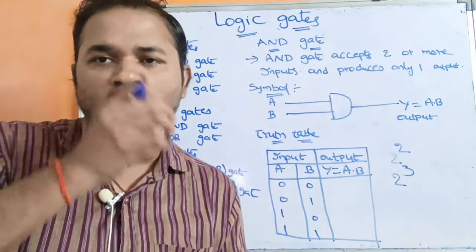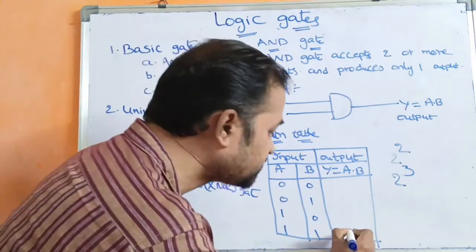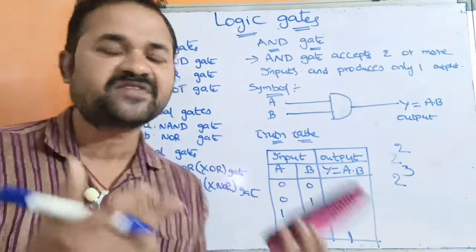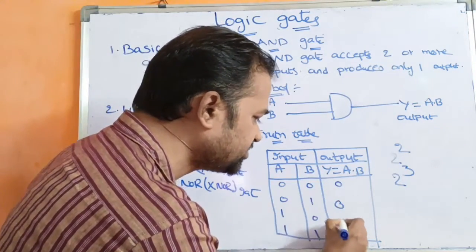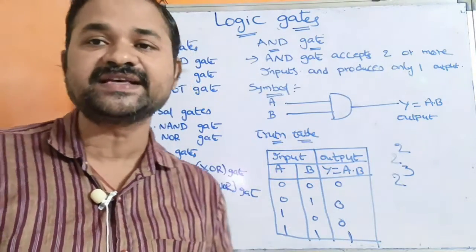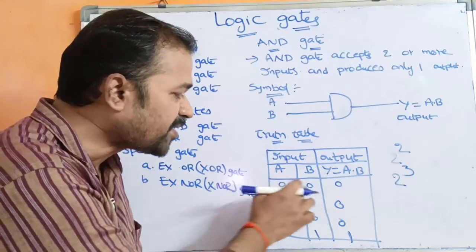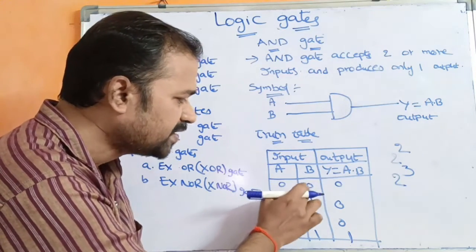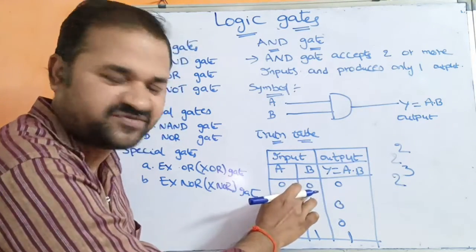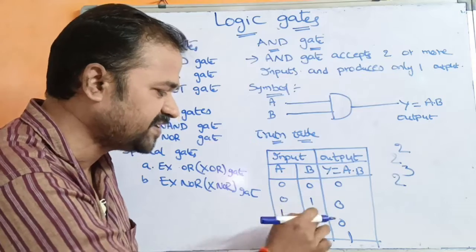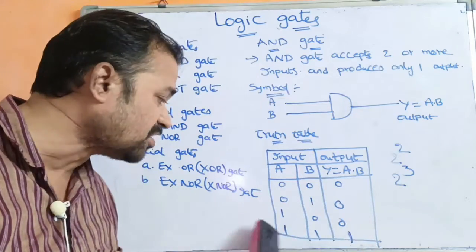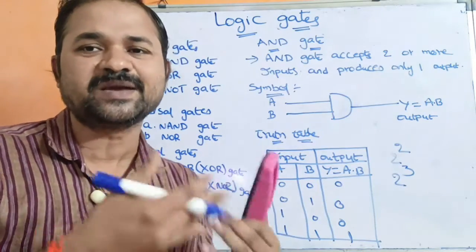For the AND gate, if both the inputs are 1, then the result is 1. Otherwise the result is 0. Here 0 is called as low, whereas 1 is called as high. So we can say that if one of the inputs is 0, then the output is 0. In 00 we have 0, in 01 we have 0, in 10 we have 0. If one of the input is 0, then the output is 0; otherwise the output is 1. So this is about the AND gate.